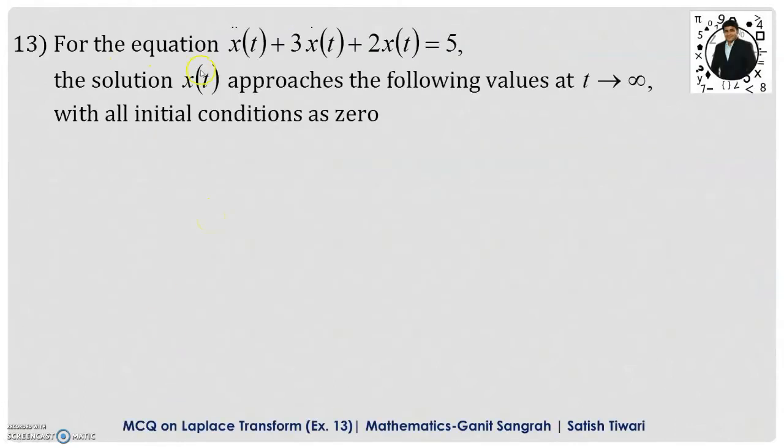Example number 13: For the equation x double dot of t plus 3 x dot of t plus 2x of t equals 5, the solution x of t approaches the following values at t tending to infinity with all initial conditions as zero. Four options are given to us.